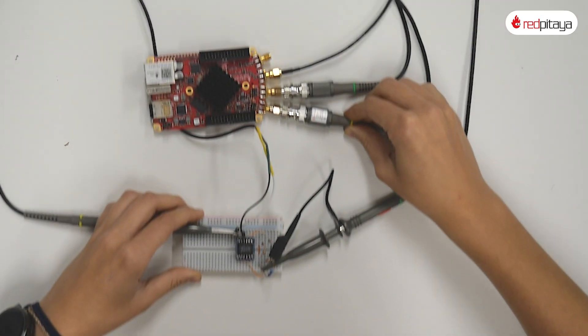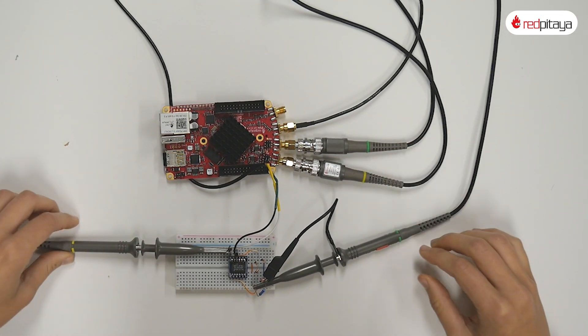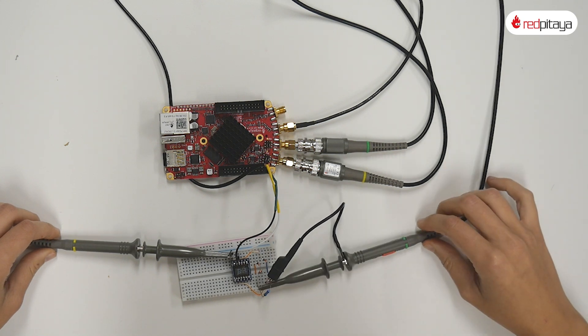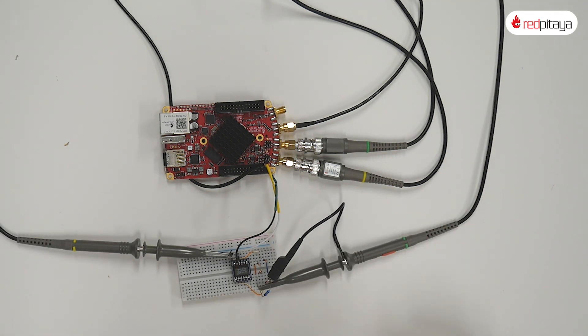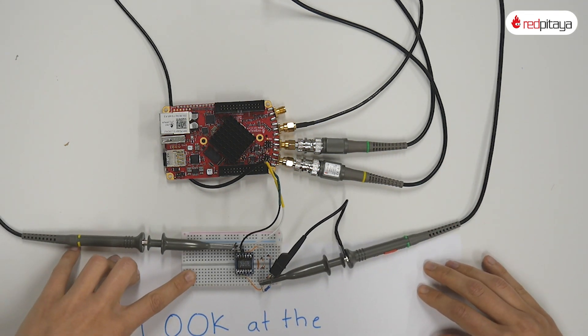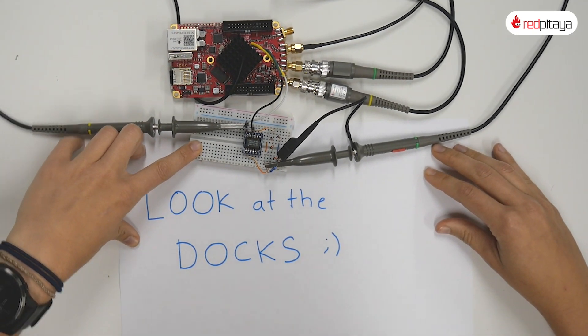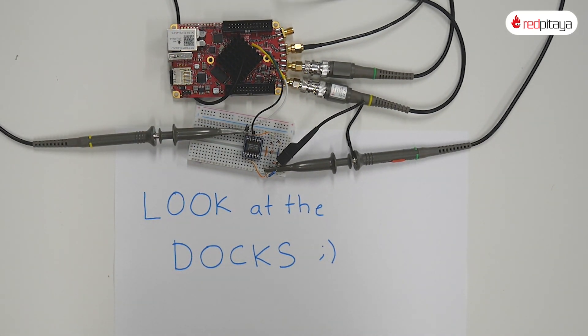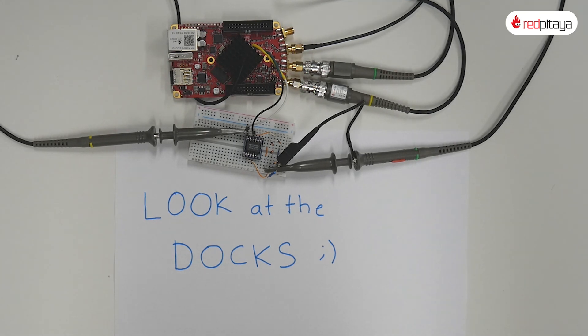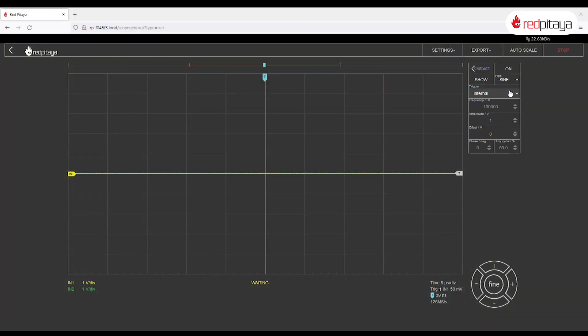But let's check how exactly. To keep this video short, I prepared the circuit in advance. Let's just observe the voltage on the secondary winding of the transformer and the output of the full bridge rectifier. We can see that the negative half-wave is mirrored over the positive side.